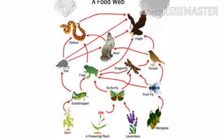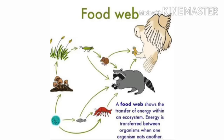In a food web, a plant like grass may be consumed by grasshoppers, deer, or snails. Grasshoppers may be consumed by lizards or frogs, and lizards and frogs may be eaten by snakes, hawks, or eagles. Grass is thus consumed by many animals, and a grasshopper is consumed by two or three animals. Such interlinked food chains form a food web.